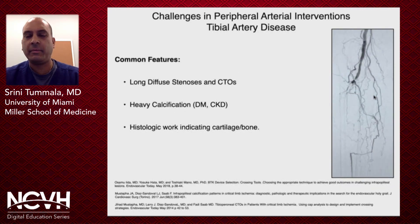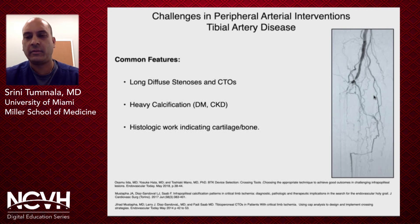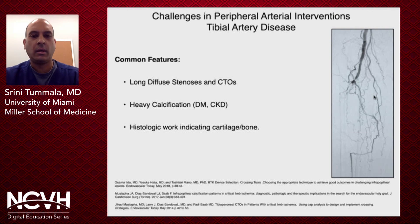When it comes to tibial disease, we know we're dealing with long diffuse stenoses and CTOs. These vessels are typically heavily calcified, especially when dealing with diabetics and patients with CKD. And there's some early histologic work indicating cartilage and bone in these vessels.